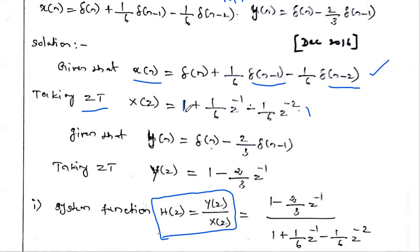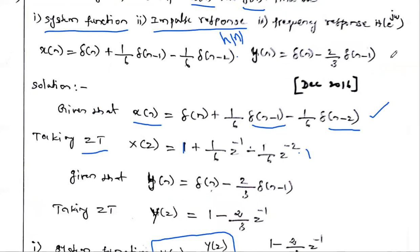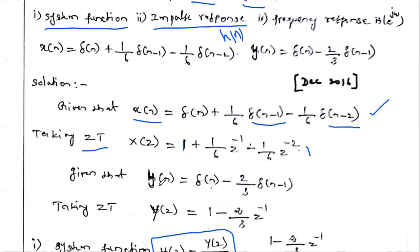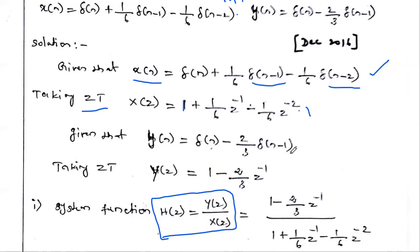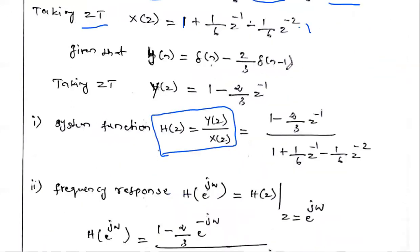Similarly, the time-domain output is given: y(n) = δ(n) − (2/3)δ(n−1). For the above equation, take the Z-transform. The Z-transform of y(n) gives capital Y(z) — what is the Z-transform of δ(n)? It is 1.